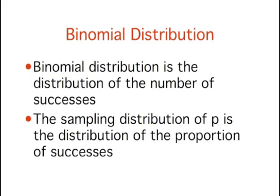The distribution of p is closely related to the binomial distribution. The binomial distribution is the distribution of the number of successes, favoring candidate A, for example, whereas the distribution of p is the distribution of the proportion of successes.